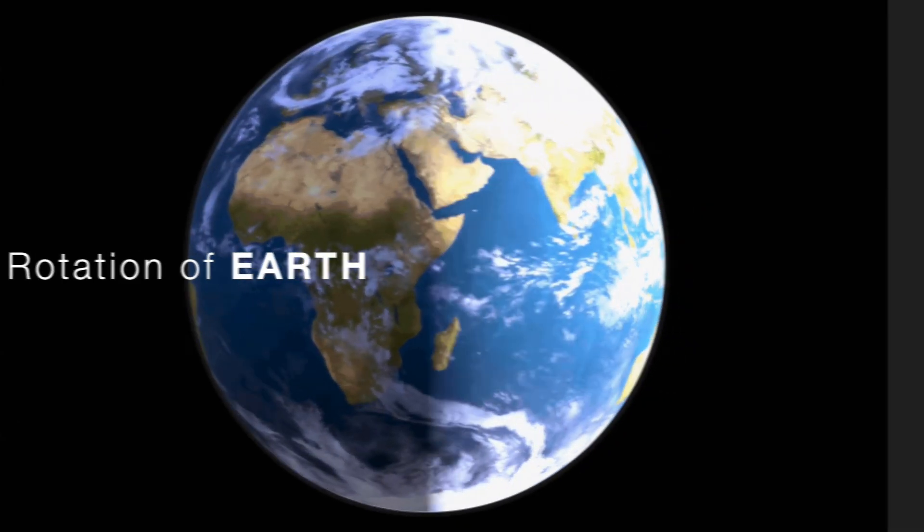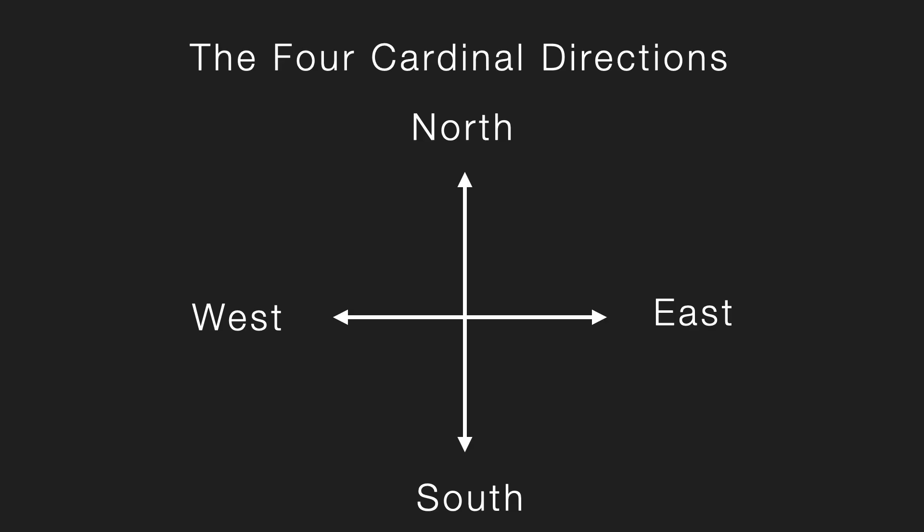When we show direction on a flat surface like your computer screen, your mobile screen, or a piece of paper, we usually draw them like this: north at the top, south at the bottom, east to the right, and west to the left. These are the four cardinal directions, and everything we are about to explore - sunrise, sunset, Earth's rotation - will follow this same standard layout.